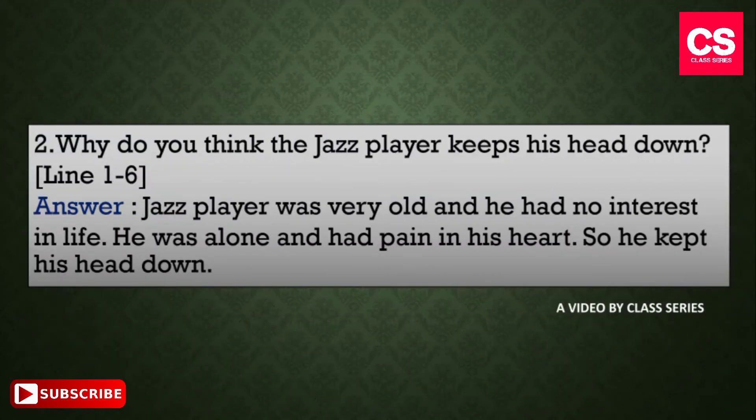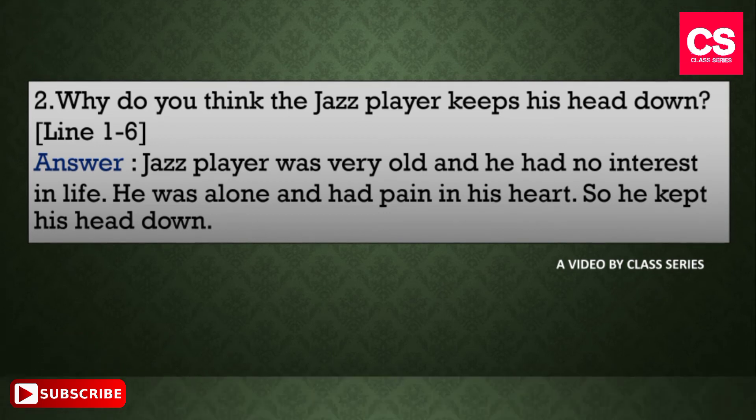Number seven, shoes — run down shoes with paper in them. Our second question is: why do you think the jazz player keeps his head down? Check lines one to six. The answer: the jazz player was very old and had no interest in life. He was alone and had pain in his heart, so he kept his head down.